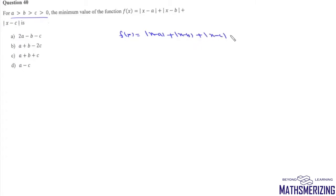If we look at this expression, this is nothing but the deviation of x from these three given numbers a, b, and c. We know that mean deviation about median is the minimum.